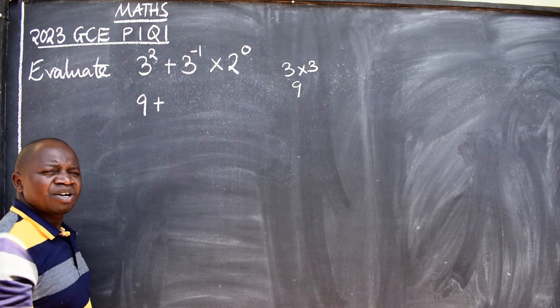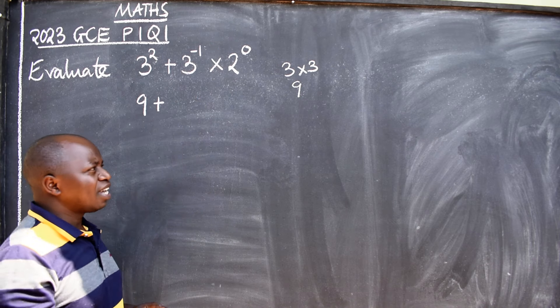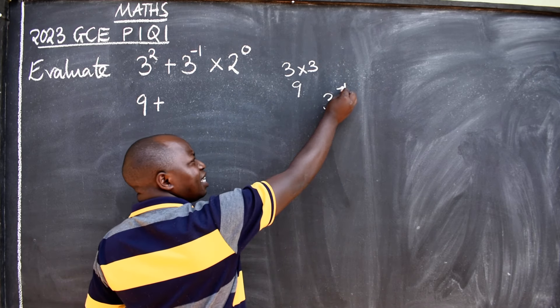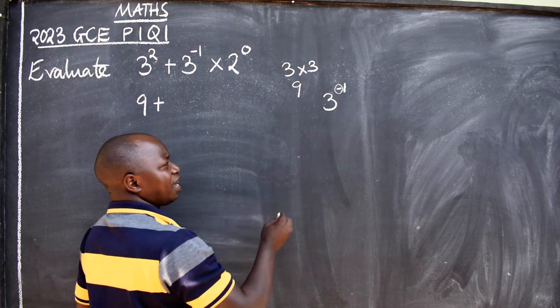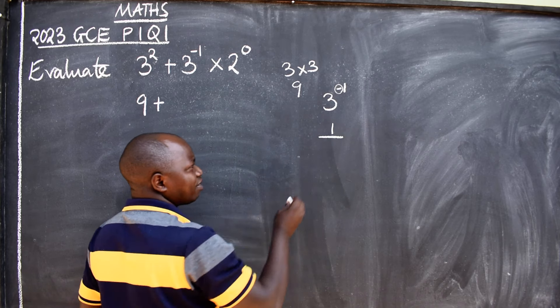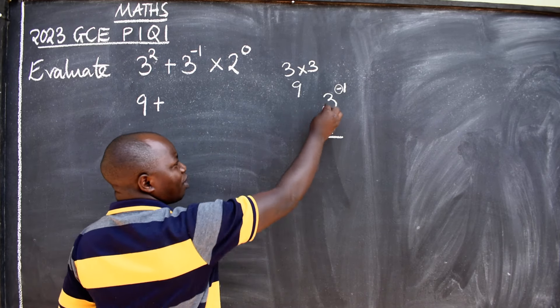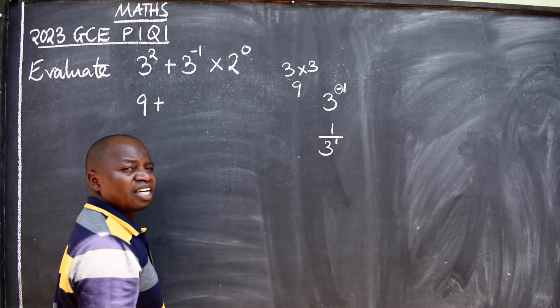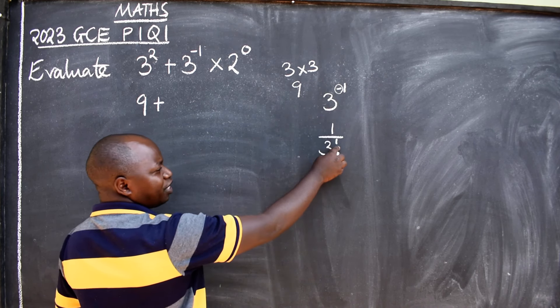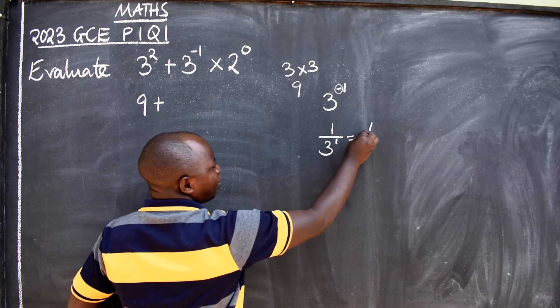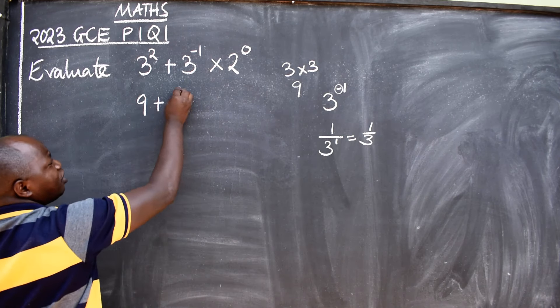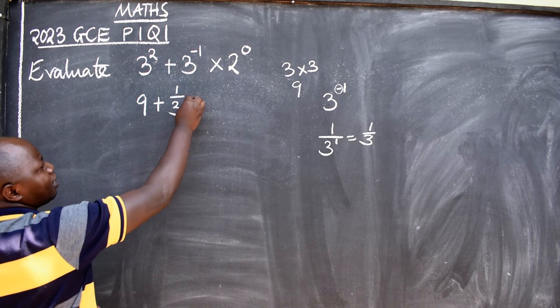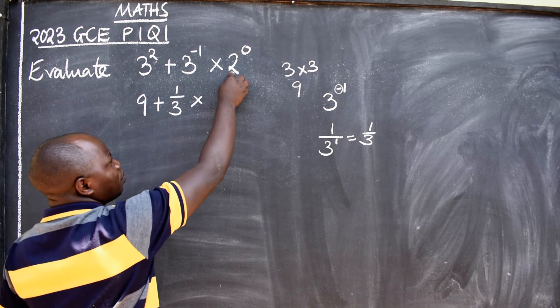Plus 3 raised to the power negative 1. What does that mean? The negative on its own here means 1 over 3 to the power 1, and now 1 is positive, which is the same as 1 over 3. So what we have here is 1 over 3.